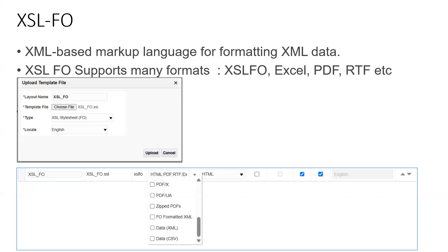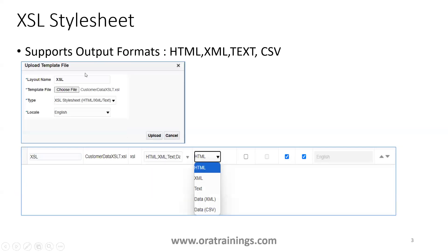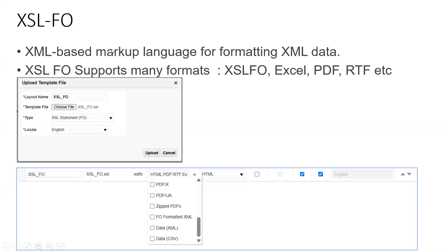When uploading an XSL template, you must select the appropriate template type. The first type is XSL Stylesheet, used for XSL Stylesheet templates, and the other is XSL Stylesheet FO template. Both are different — they are not the same at all.